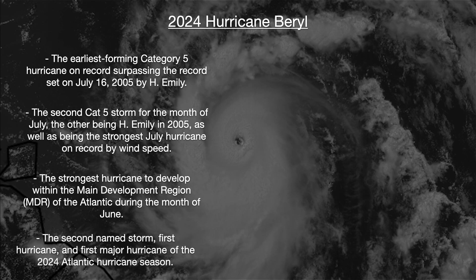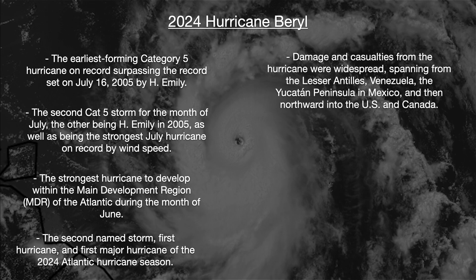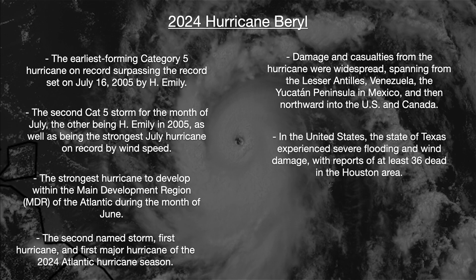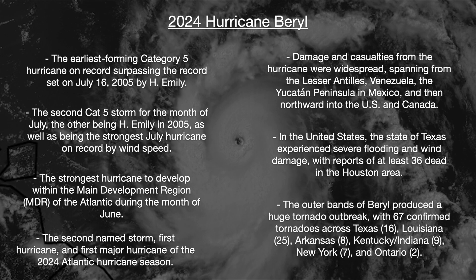Beryl was the second named storm, first hurricane, and first major hurricane of the 2024 Atlantic hurricane season. Damaging casualties from the hurricane were widespread, spanning from the Lesser Antilles, Venezuela, the Yucatan Peninsula in Mexico, and northward into the U.S. and Canada. In the United States, the state of Texas experienced severe flooding and wind damage, with reports of at least 36 dead in the Houston area. The outer bands of Beryl produced a huge tornado outbreak, with 27 confirmed tornadoes across Texas, Louisiana, Arkansas, Kentucky, Indiana, New York, and Ontario.